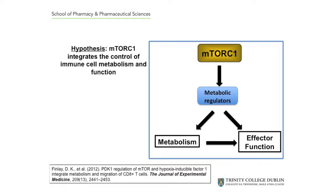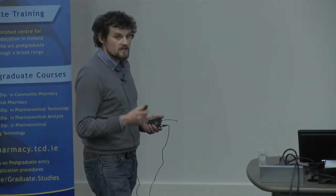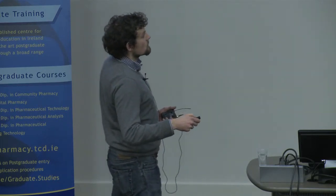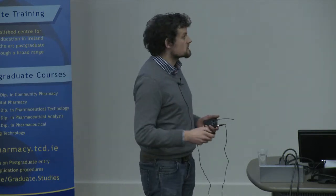Exactly how mTORC1 does this is really poorly characterized, but it is interesting to note that mTORC1 also has key and well-characterized roles in regulating various aspects of cellular metabolism. These roles have been characterized in non-immune cells and to a large extent have been overlooked when thinking about immune cell function. The question is whether these are two distinct roles for mTORC1 or whether they are related — and this is essentially the focus of our research group.